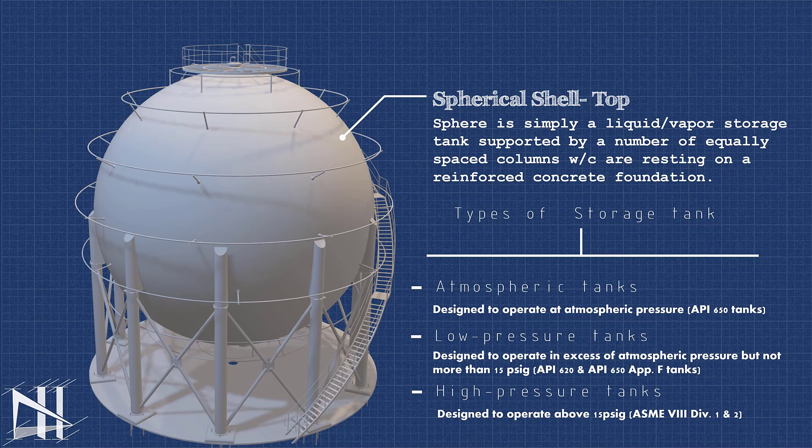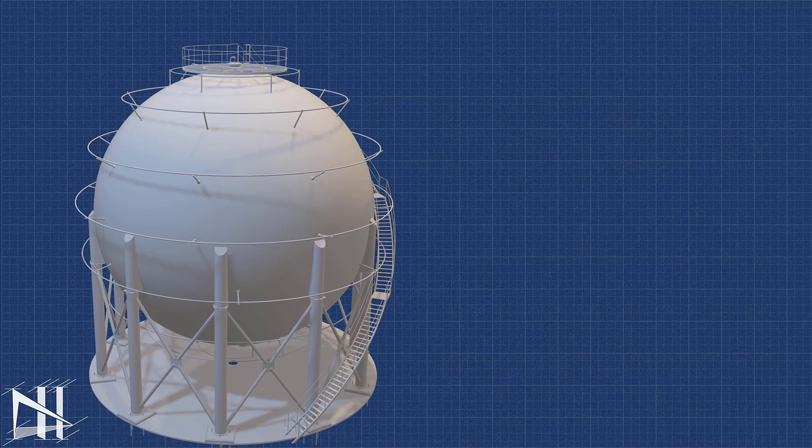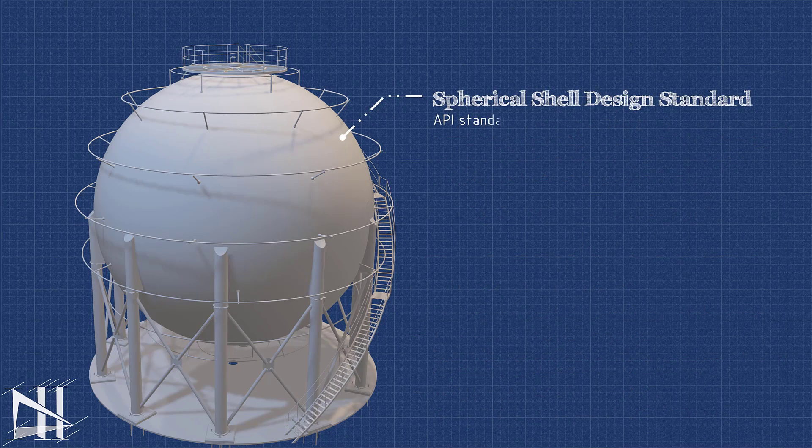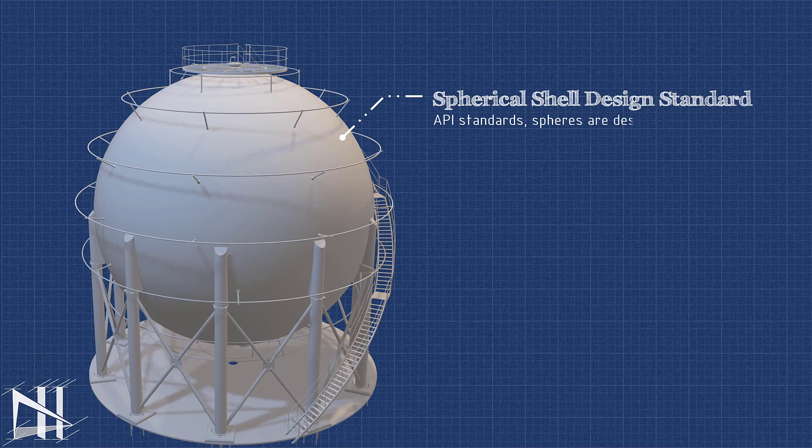Spherical Storage Tanks are used to store a variety of liquids and gases, including fuel oil, natural gas, chemicals, liquefied petroleum gas (LPG), and ammonia. They are a safe and reliable way to store these materials.